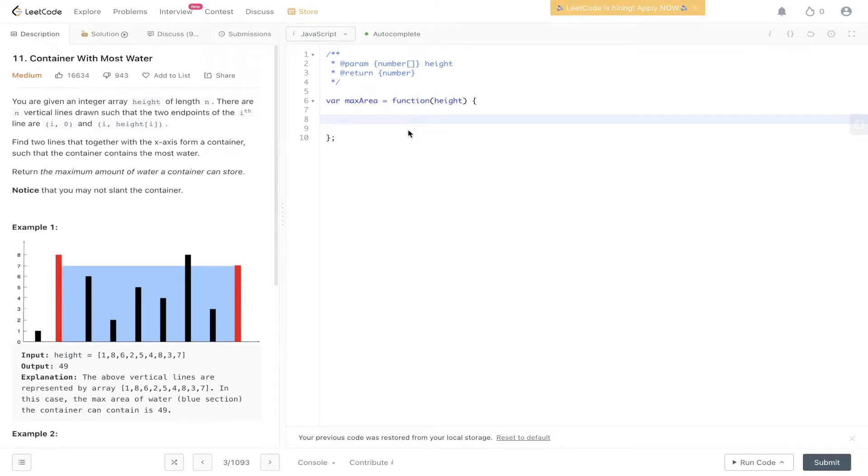Question 11, LeetCode, Container with Most Water. You're given an array height of length n. There are n vertical lines drawn such that the two endpoints of the ith line are i,0 and i, height at index i. Find two lines that together with the x-axis form a container such that the container contains the most water.